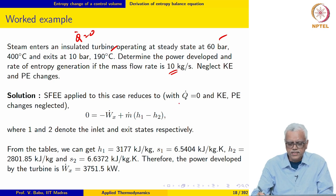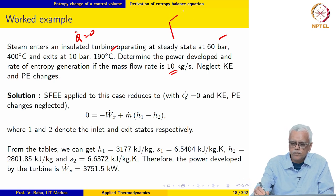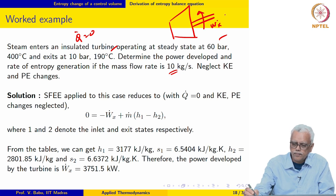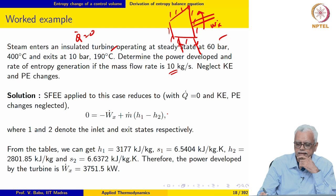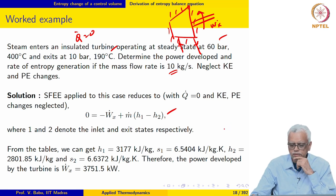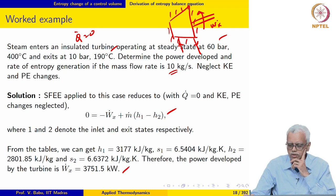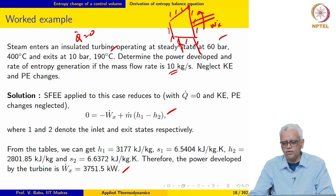We apply the steady flow energy equation to the steam turbine, drop all other terms, and retrieve the values for H_1 and H_2 from the tables. We can evaluate Ẇ_x to be 3751.5 kW for the given mass flow rate of 10 kg/s.